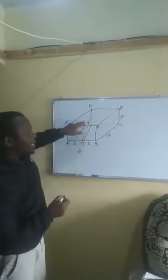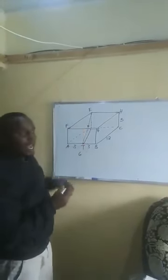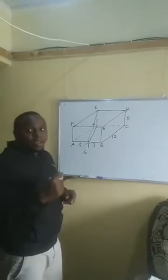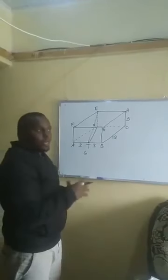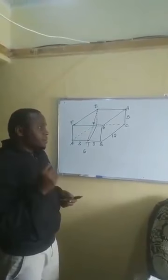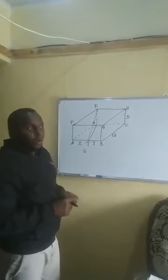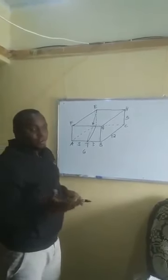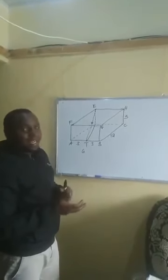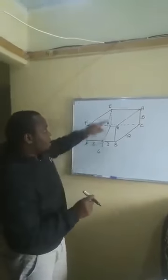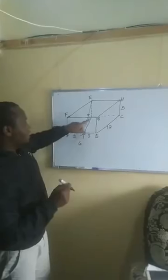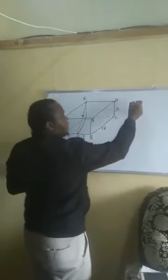If we extract triangle ETD, it is going to be a right-angled triangle. In this topic we are going to be dealing with right angles, and when you have a right angle all three trigonometric ratios apply — that is tangent, sine, and cosine.